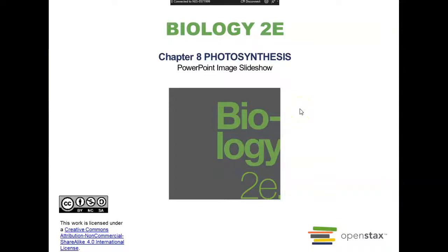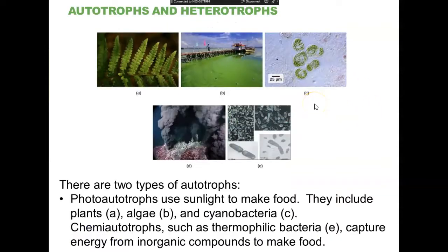Hello students, this is a recording for Biology 1406 Chapter 8 in the OpenStax textbook — Photosynthesis. This is the third and final lecture of Unit 3. Photosynthesis is one of the defining features of autotrophic organisms, and hopefully you're all well versed on the difference between autotrophs and heterotrophs.